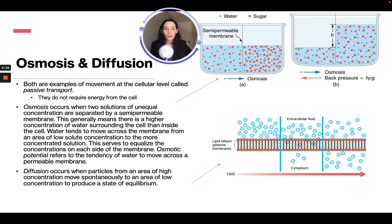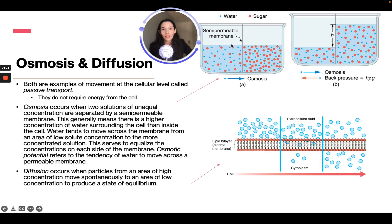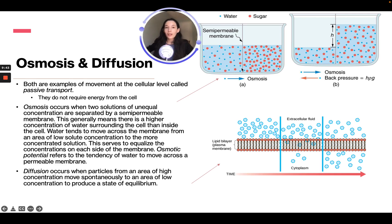Osmotic potential refers to the tendency of water to move across the permeable membrane. For example, if one side of a semi-permeable membrane has much more sugar than the other, water will move so that both sides have an equal concentration of sugar per water. If sugar cannot cross the membrane, water moves through to dilute the more concentrated side until both sides are equal.